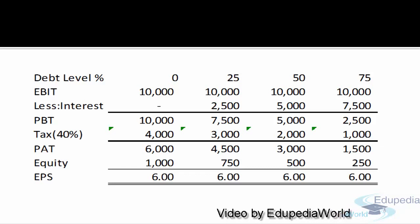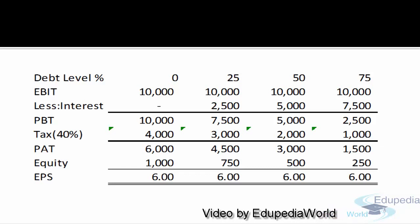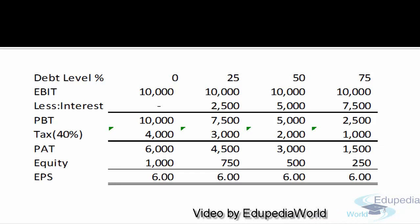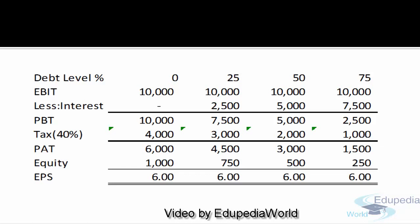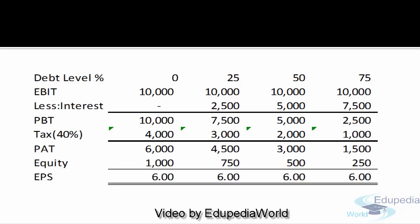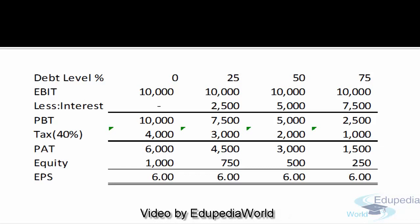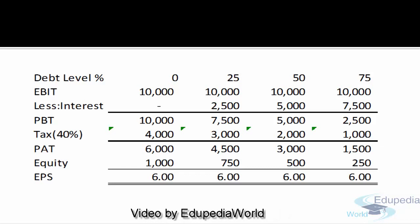So when the company is earning less than the indifference point, introducing more debt into the company will decline the EPS. So the company will not opt for more debt if the expected earnings before interest and tax is less than the indifference point EBIT.